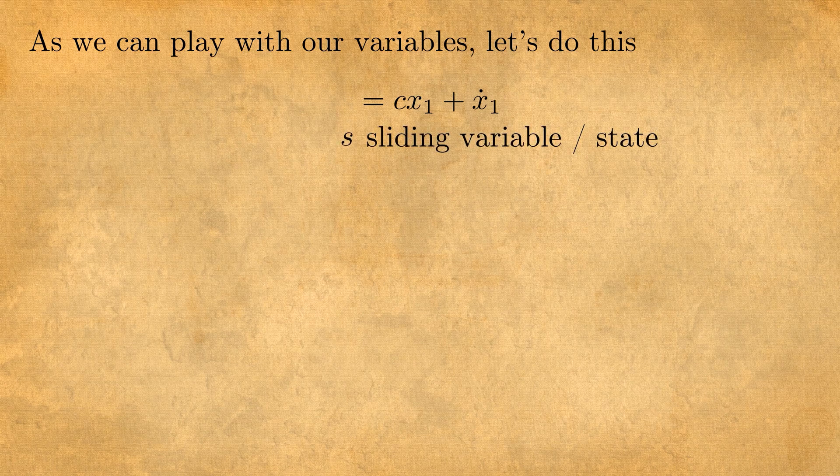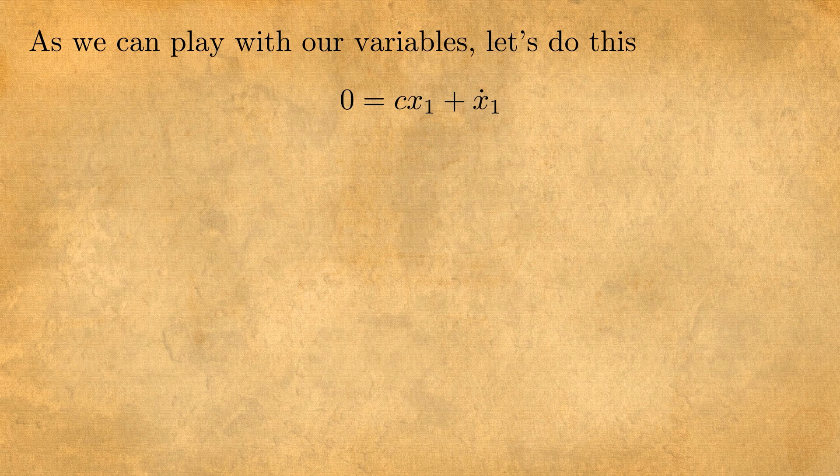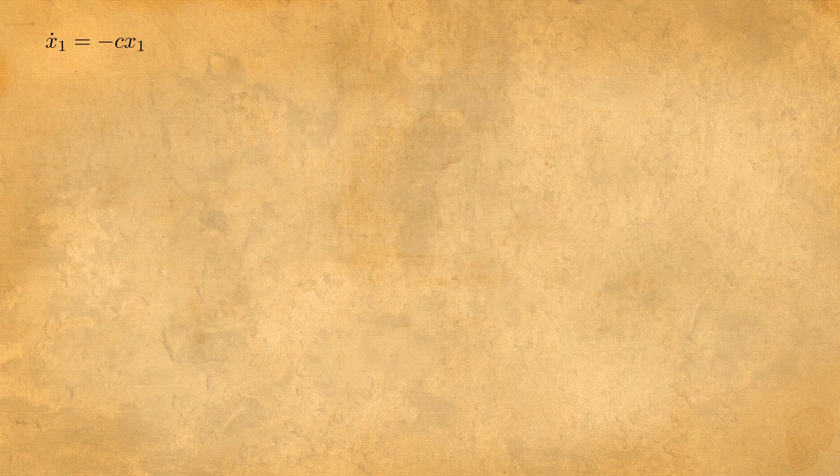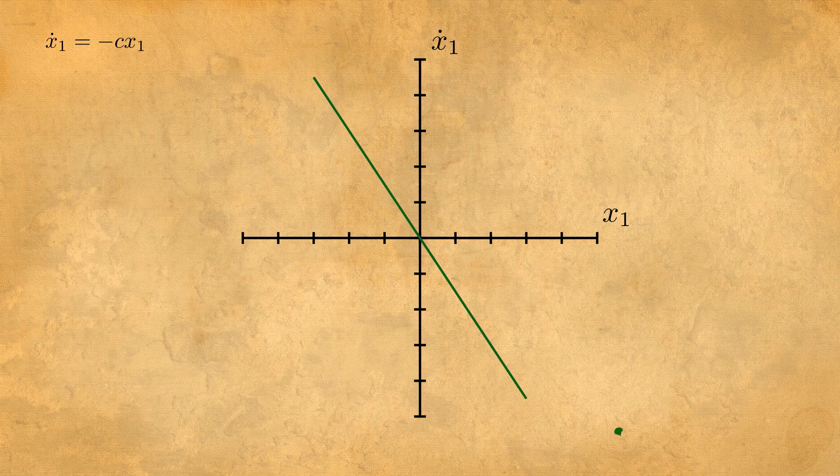s is our sliding variable and we will state that s should be equal to zero at the beginning which means that we have to solve x1 dot equals minus cx1. If you put this on a graph it's just a simple line. I choose c equals 1.5 as the example.